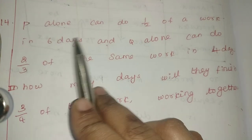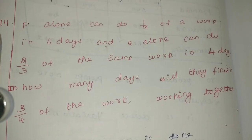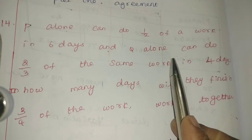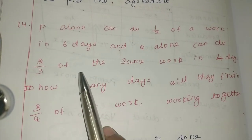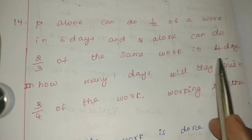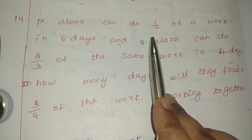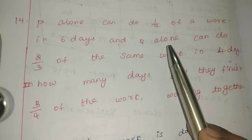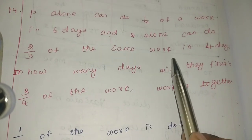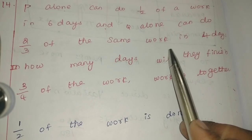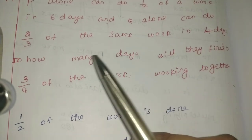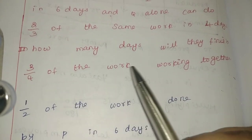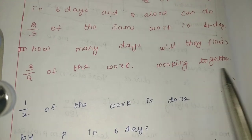P alone can do 1/2 of the work in 6 days. Q alone can do 2/3 of the same work in 4 days. How many days will they finish 3/4 of the work working together?